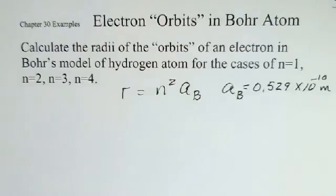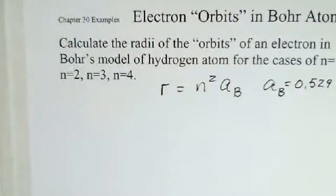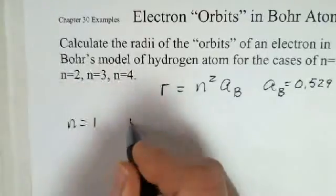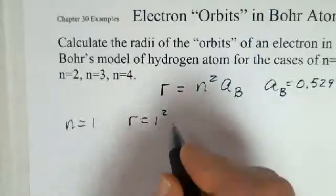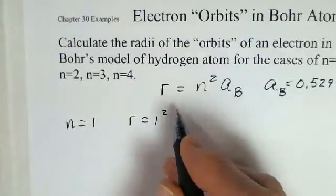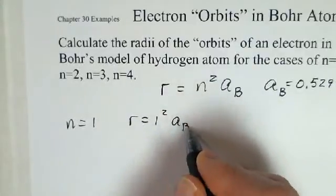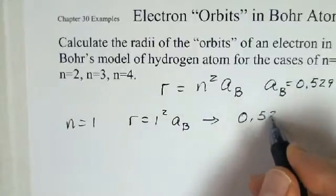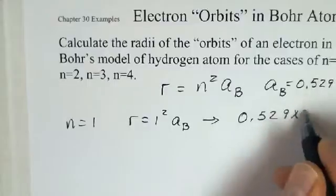What are the radii of the orbits for the Bohr model of the hydrogen atom? Well, if n is equal to 1, this calculation is not too difficult. 1 squared times the Bohr radius. I'm just going to write a sub B, and that's just the Bohr radius, 0.529 times 10 to the minus 10 meters.